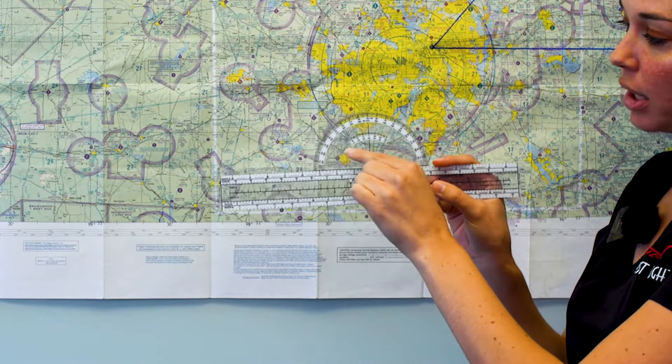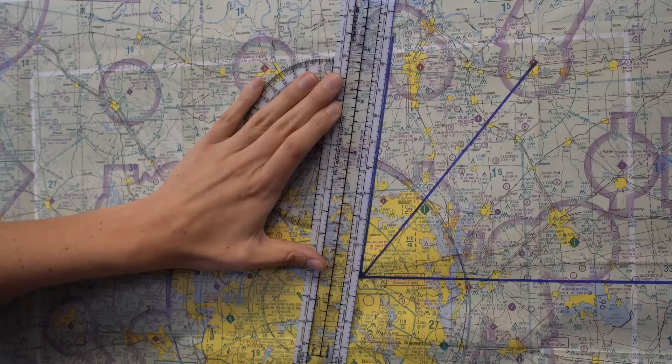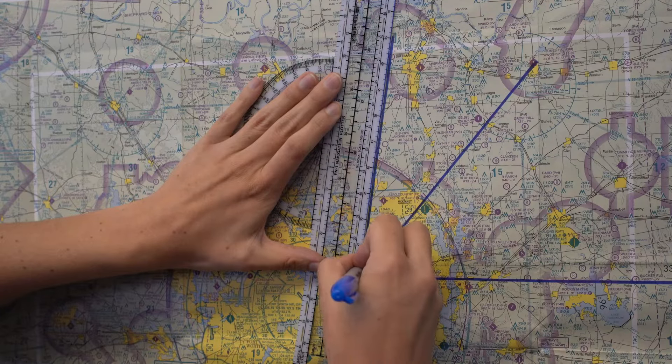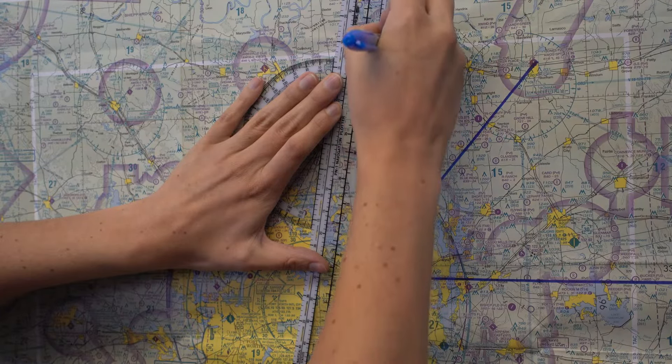There's one other inner ruler here that you want to use if you need to use a line of latitude. So let's say our flight goes directly north south. We'll use another example here.